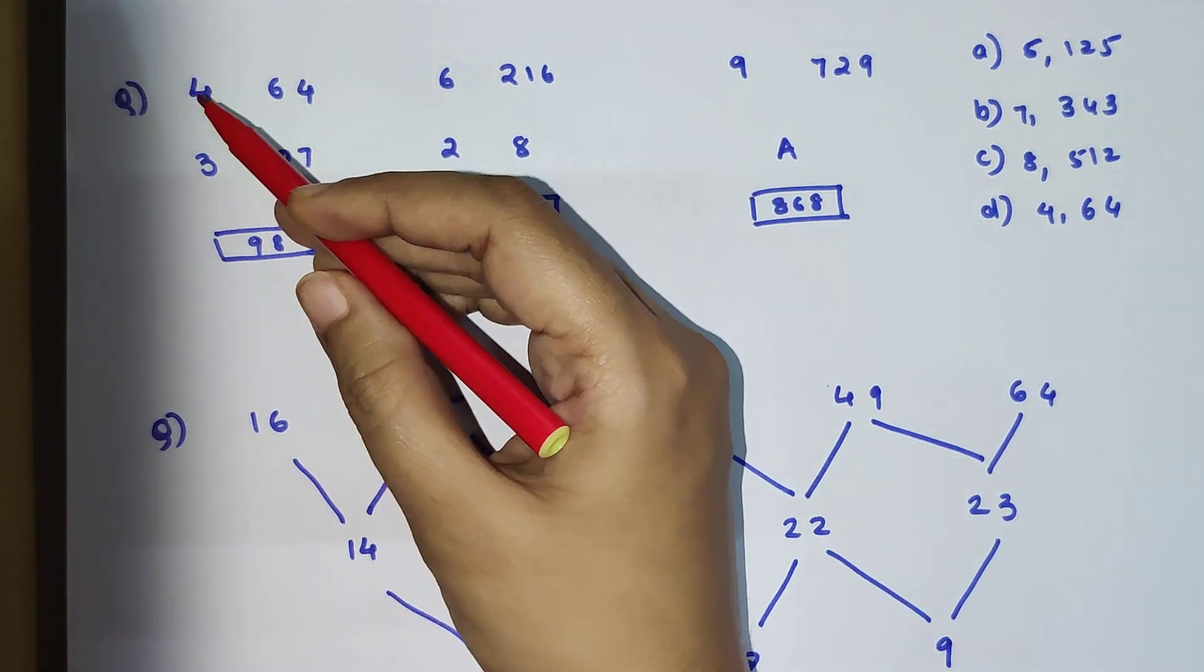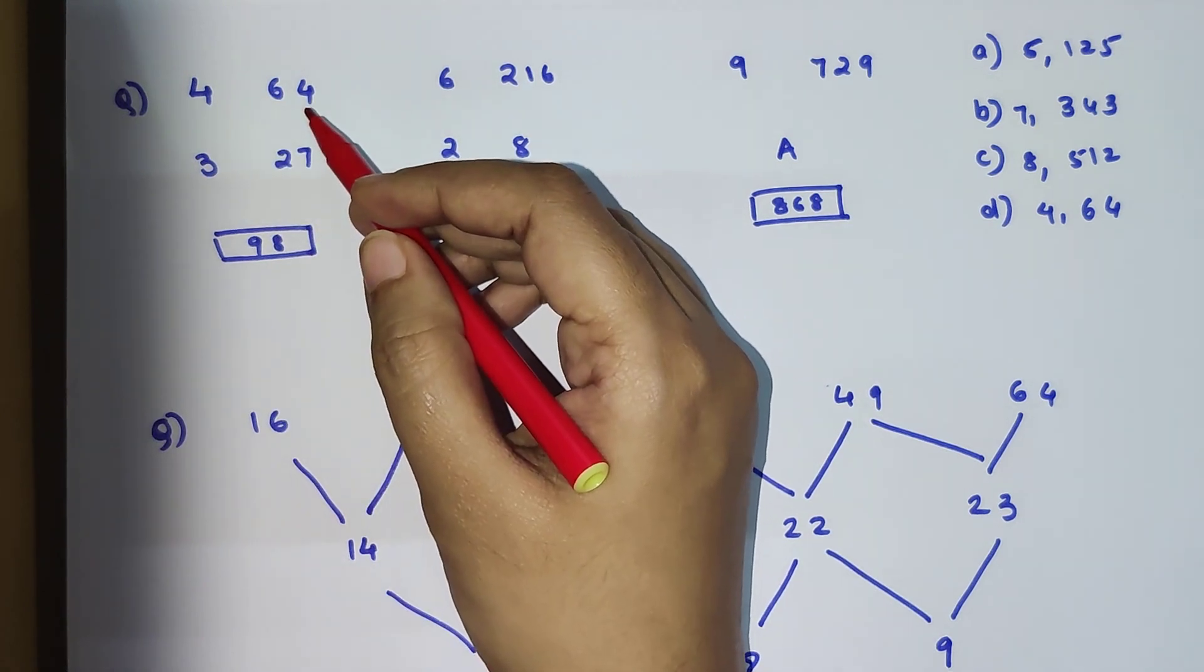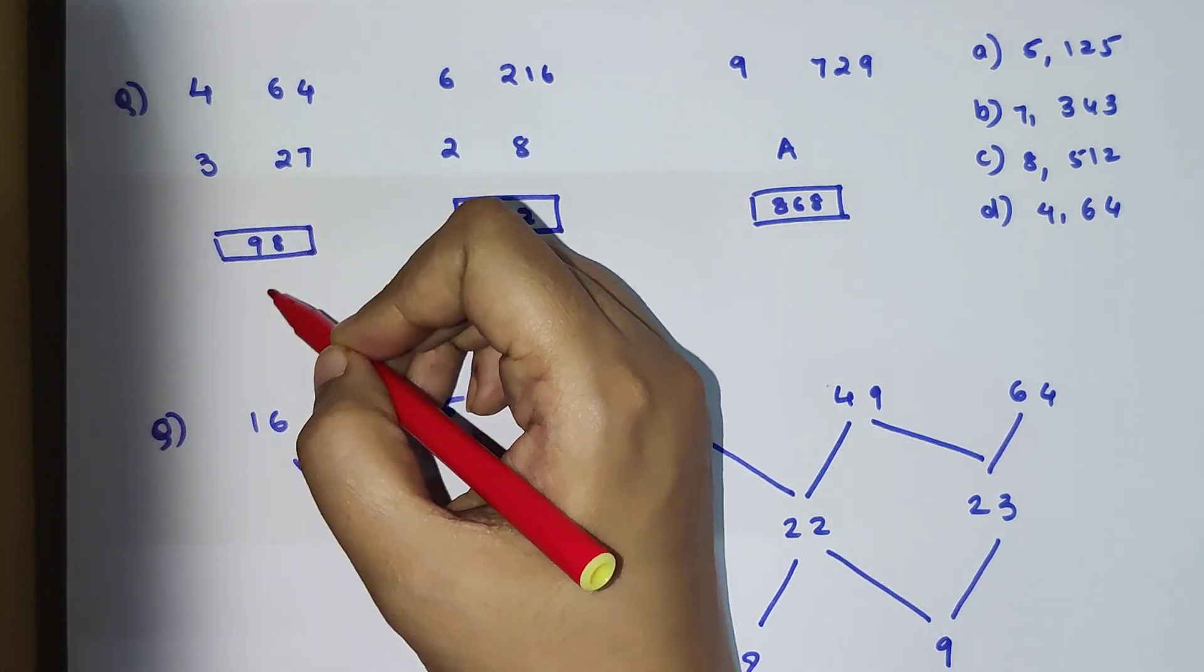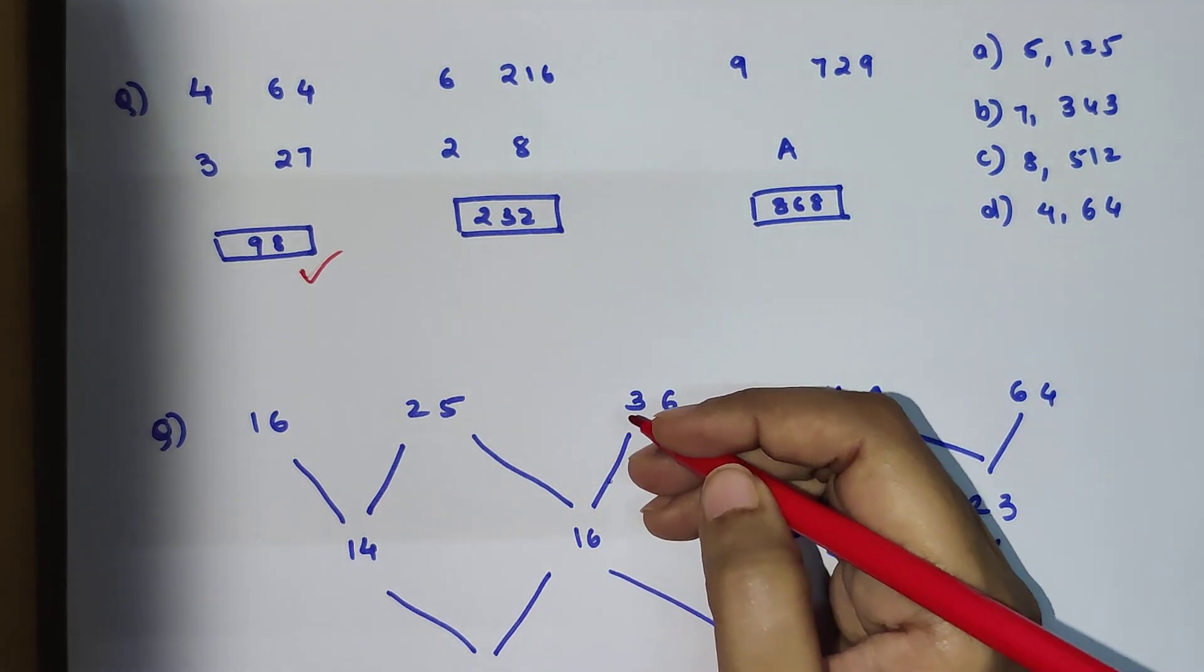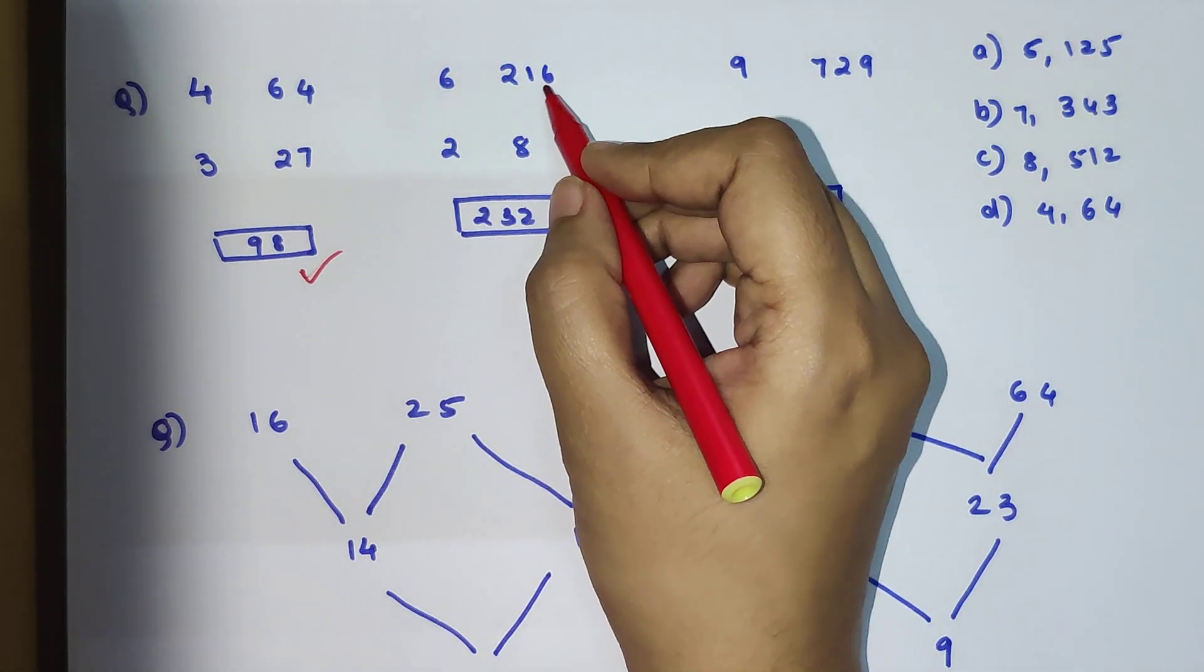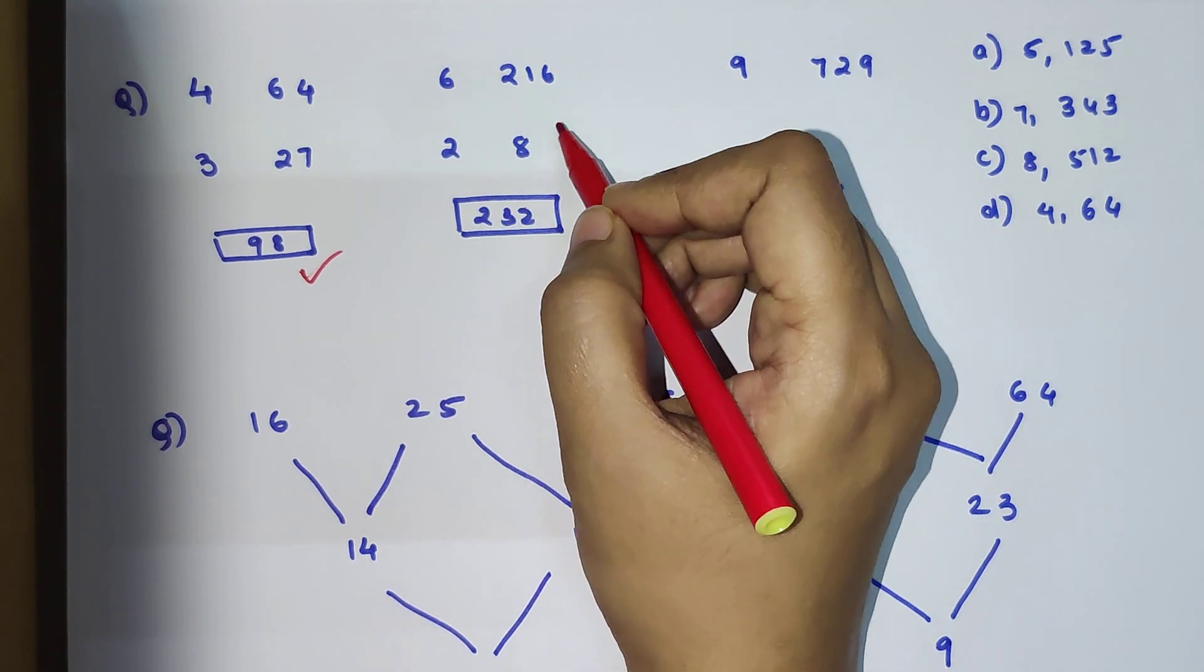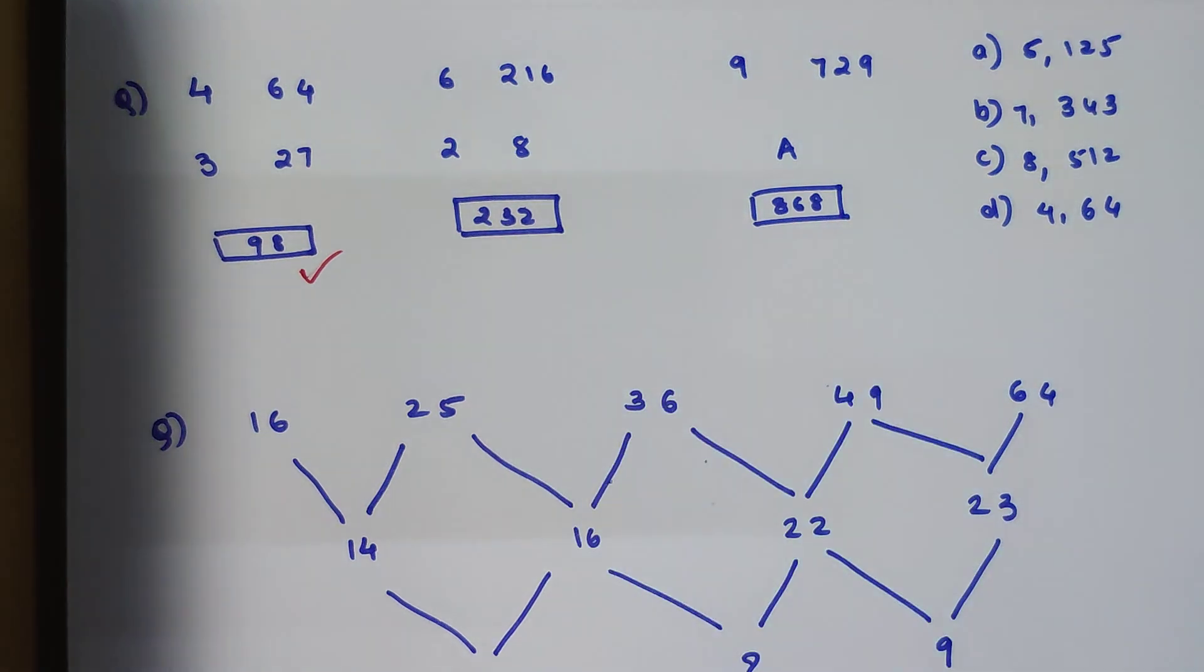Now let's try and add all of these. So 64 plus 4 will get you 68, plus 3 will get you 71, plus 27 will get you 98. So I can say that addition of all of these numbers is getting me the final resultant number which is put in a box.